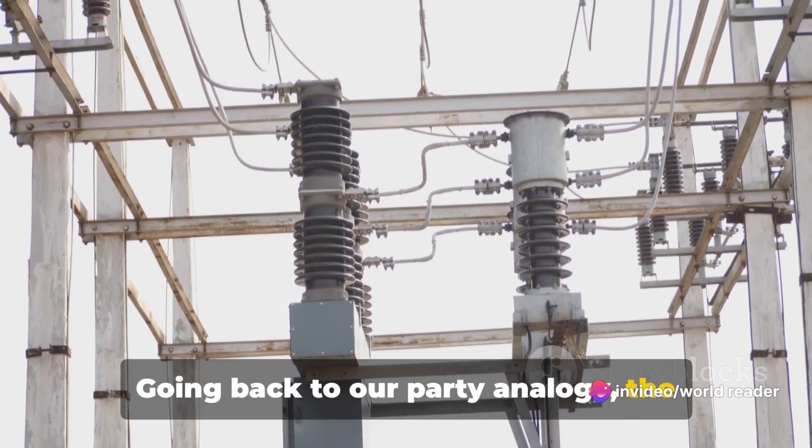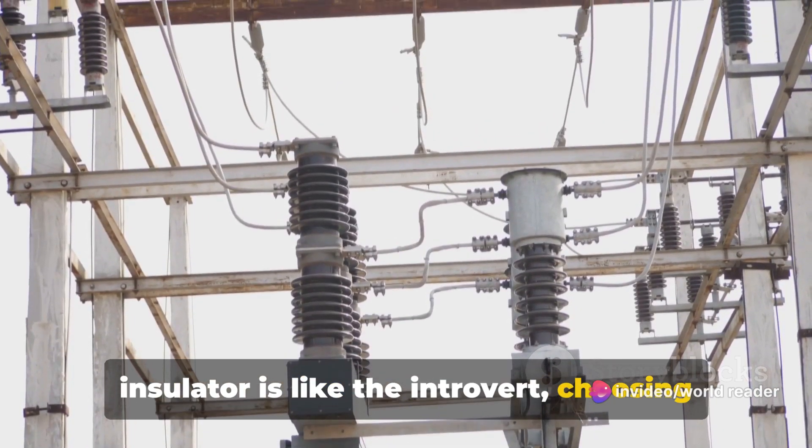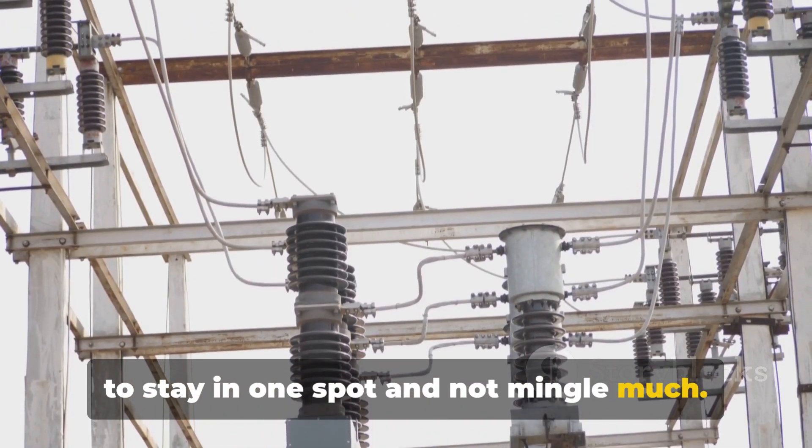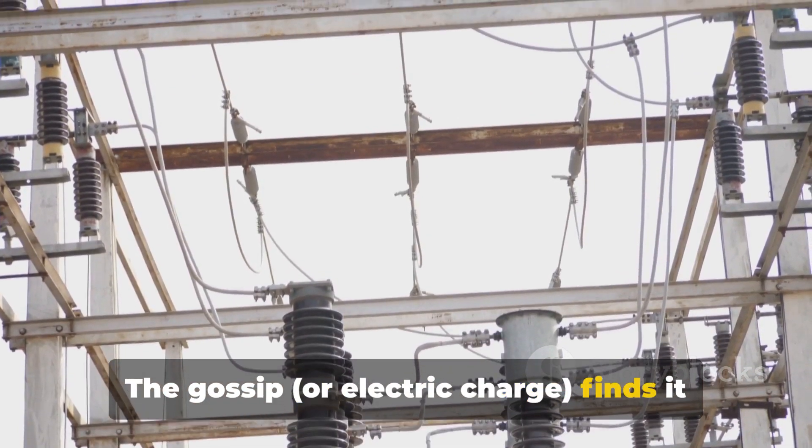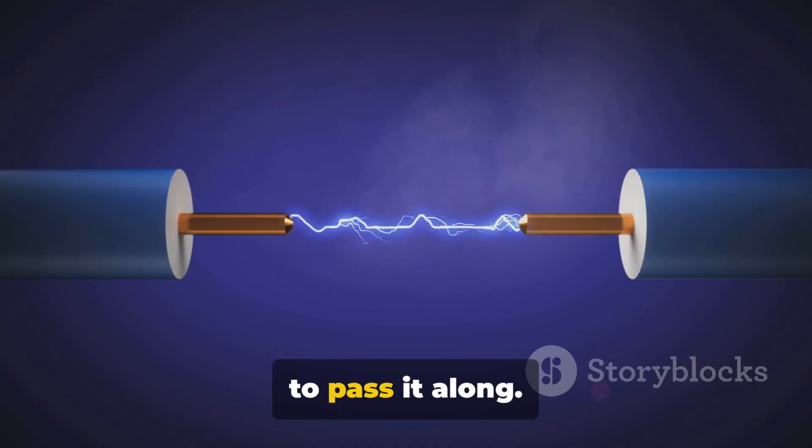Going back to our party analogy, the insulator is like the introvert, choosing to stay in one spot and not mingle much. The gossip, or electric charge, finds it hard to get around because there's no one to pass it along.